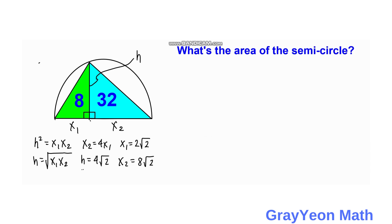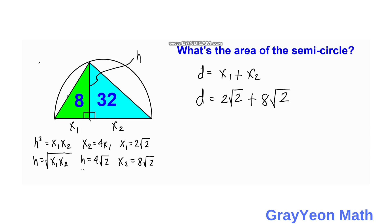Next, we get the diameter of the semicircle, which is simply x1 plus x2. Diameter equals 2 square root of 2 plus 8 square root of 2, so the diameter equals 10 square root of 2 units.